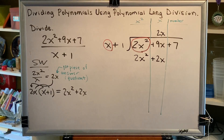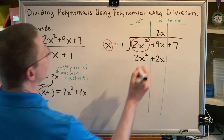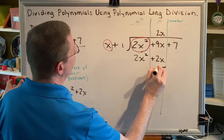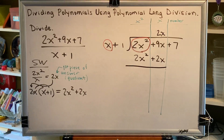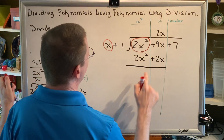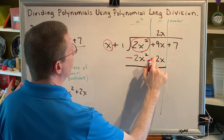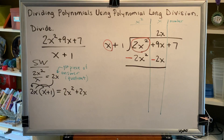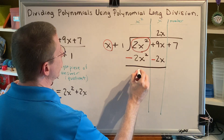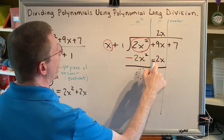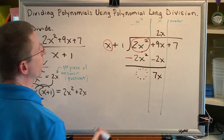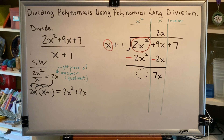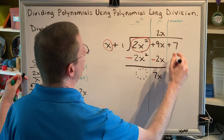The next step is to subtract, and we do that by using the rhyme: draw the line, change the sign, then combine. We draw the line to underline the terms we most recently put in our problem. We change the sign of all the underlined terms — so positive 2x squared becomes negative, and add 2x becomes subtract 2x. This is why we need the ability to erase. Then we combine vertically: 2x squared combined with negative 2x squared results in 0, and 9x combined with negative 2x results in 7x.